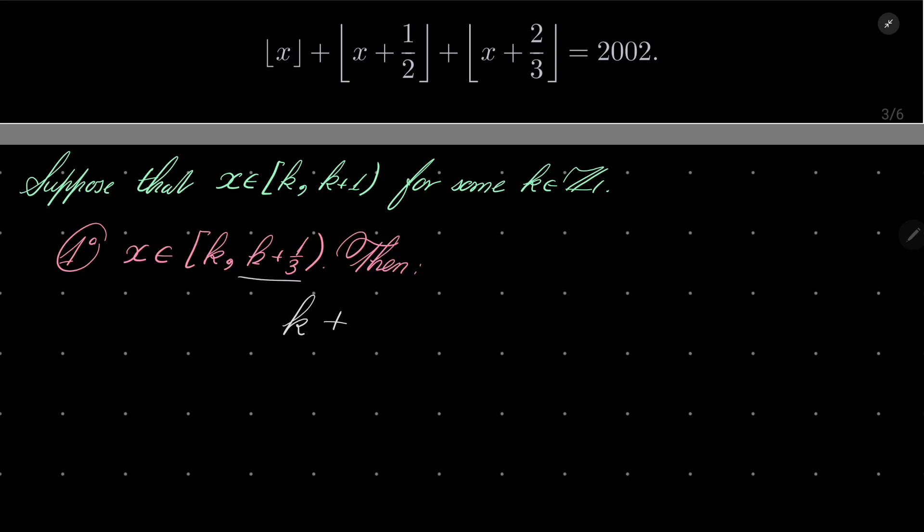Floor of x plus 1/2: our number x is less than k plus 1/3, so x plus 1/2 is less than k plus 1/3 plus 1/2, which is still less than k plus 1. So it's still k, and x plus 2/3 is also k, equals 2002.